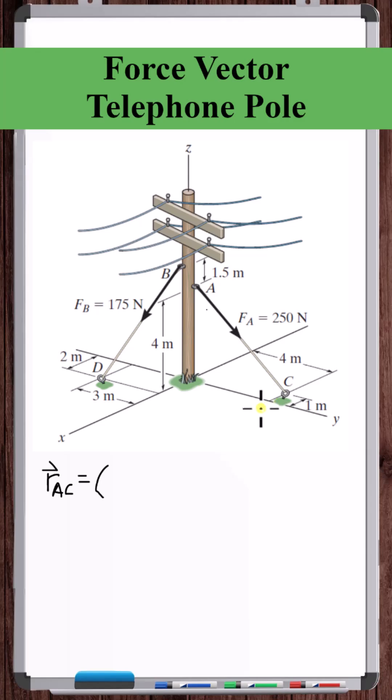XC minus XA is minus 1 minus 0. YC minus YA is 4 minus 0. ZC minus ZA is 0 minus 4. So the position vector from A to C is